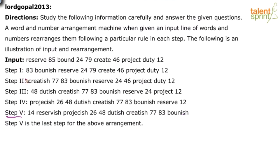Comparing this with the given input, all the words have changed and so have the numbers. Reserve has become reservish, bound has become boundish, create has become create-ish, project has become project-ish. During the process from step 1 to step 5, the last letter of each word is removed and 'ish' is added. So reserve becomes reservish; in bound, 'd' is removed and 'ish' added to make boundish; in create, 'e' is removed to make create-ish.